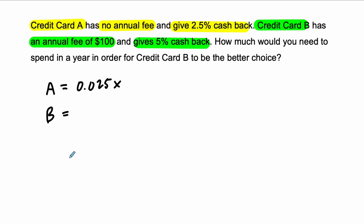But our equation for profit for credit card B is a higher percentage, so eventually you'll gain more. But how much, right, how much do you spend in order to do that? Because you do lose $100 at the beginning.